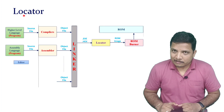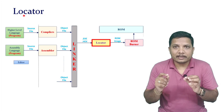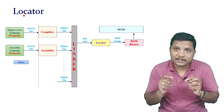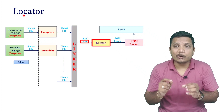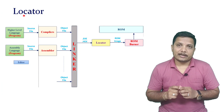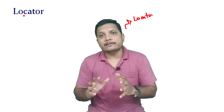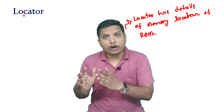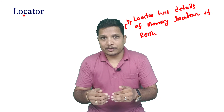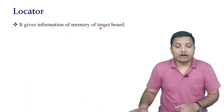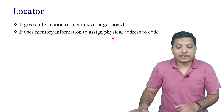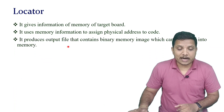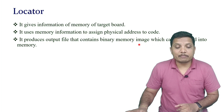Next is the locator. The locator is used to load the program into ROM. The input to the locator is the .exe file generated by the linker, and the output is a ROM image. The locator has knowledge of the memory addresses of ROM, and based on available address resources, it locates the program in the ROM image. It gives information about the target board's memory, assigns physical addresses to code, and produces an output file containing a binary memory image that can be loaded into memory.